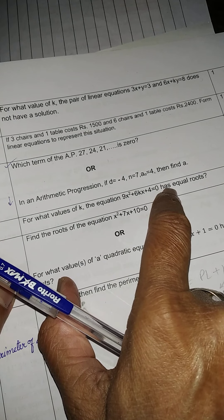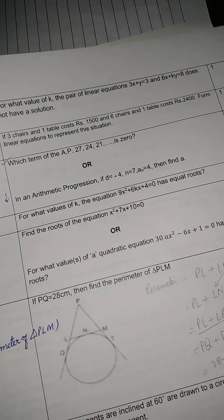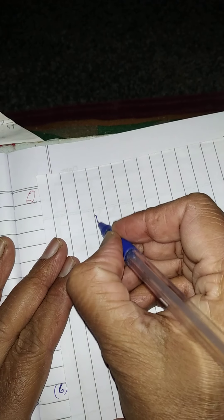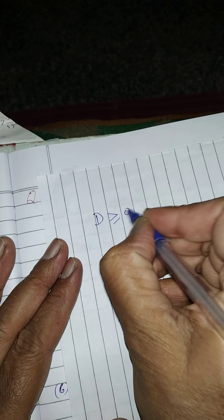If they say here real roots, then what should we do? In that case, we will have to put d is equal to, in case of real roots, we have to put like this greater than or equal to 0.